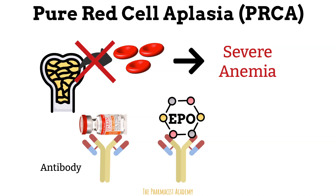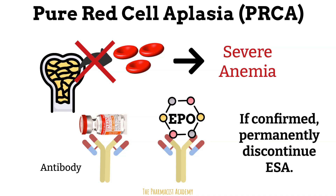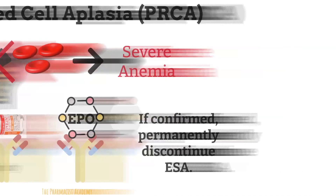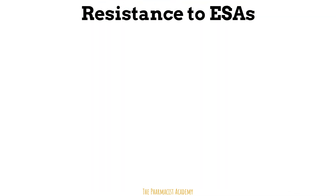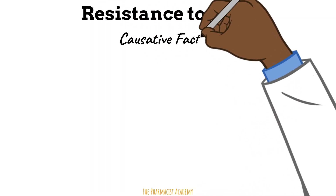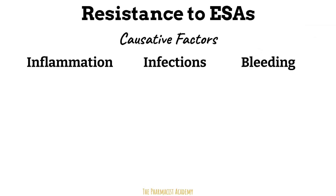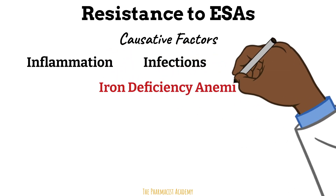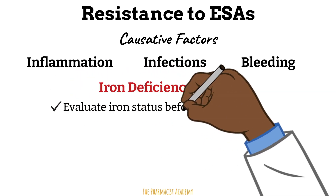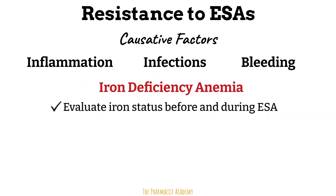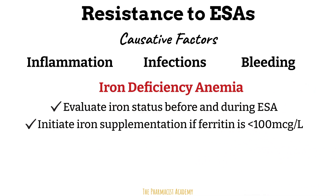Pure red cell aplasia is very rare and may not be the cause of many cases where there is a lack of response to the ESA. This can simply be resistance due to another causative factor — things like inflammation, infections, bleeding, and more importantly, iron deficiency. For all patients, evaluate iron status before and during ESA treatment and initiate iron supplementation therapy as needed.